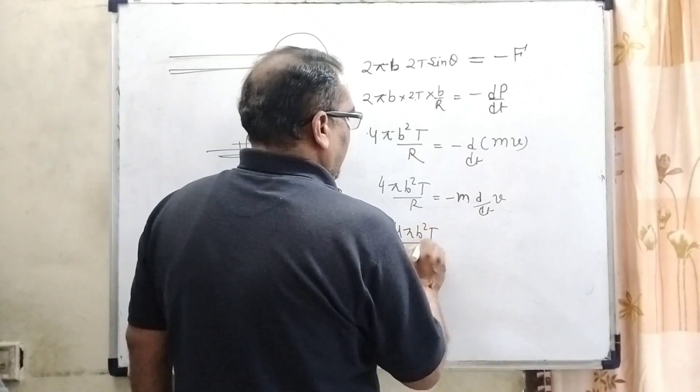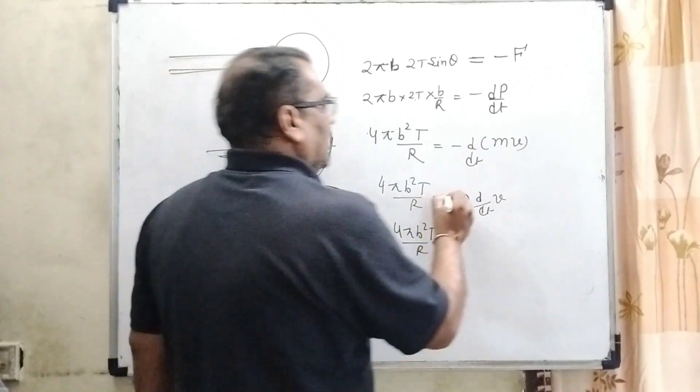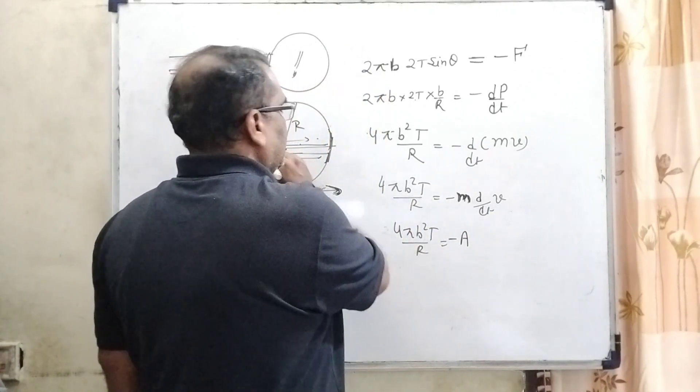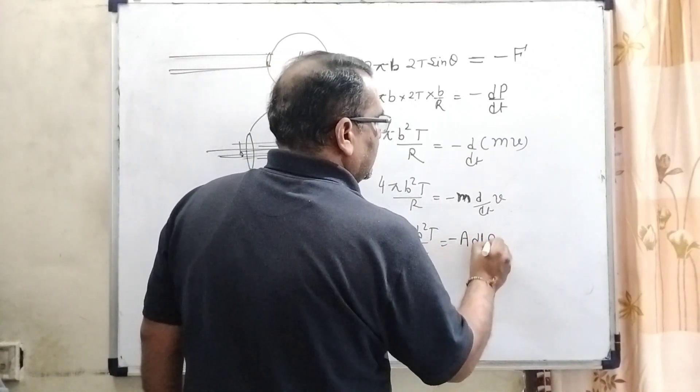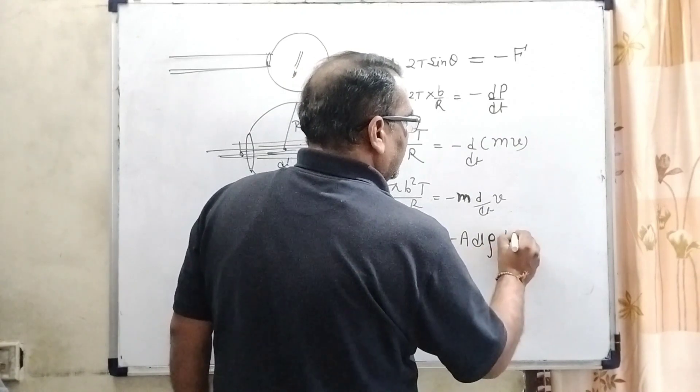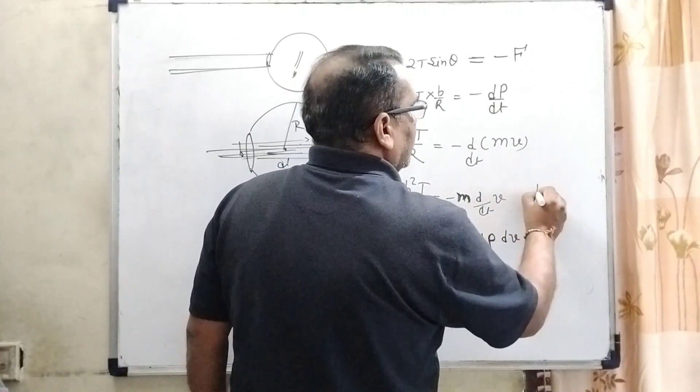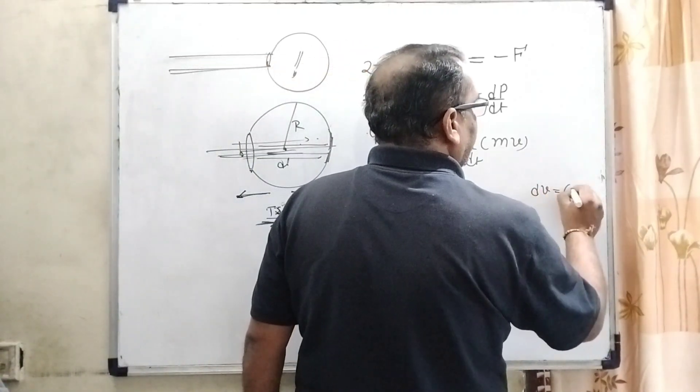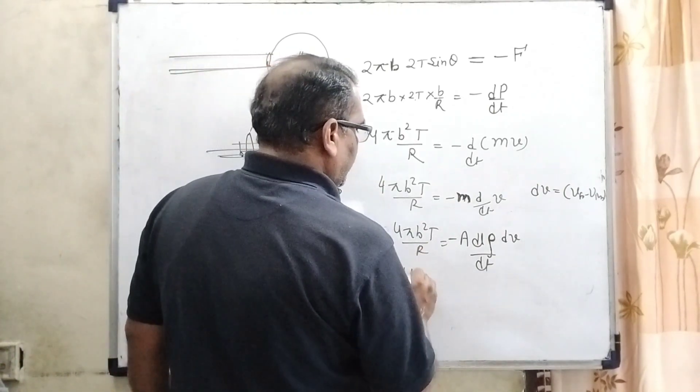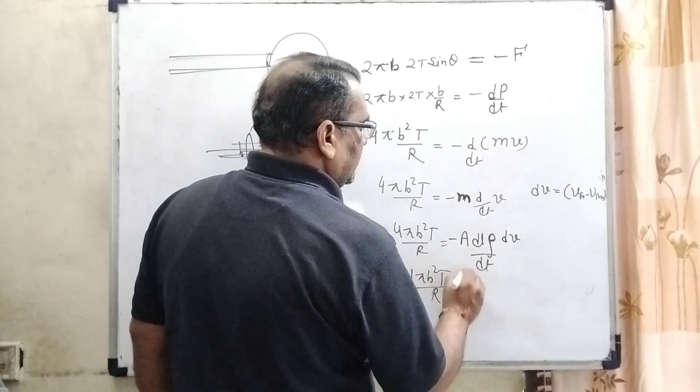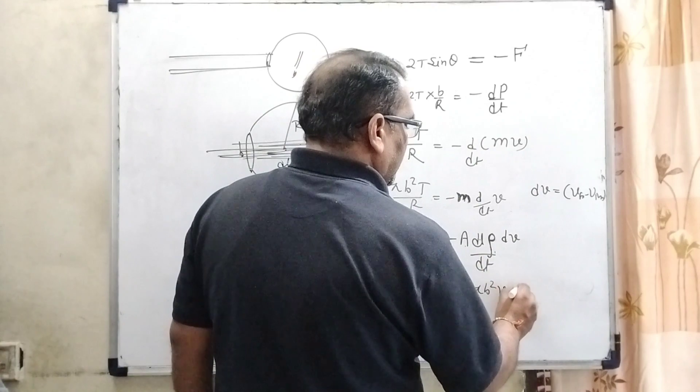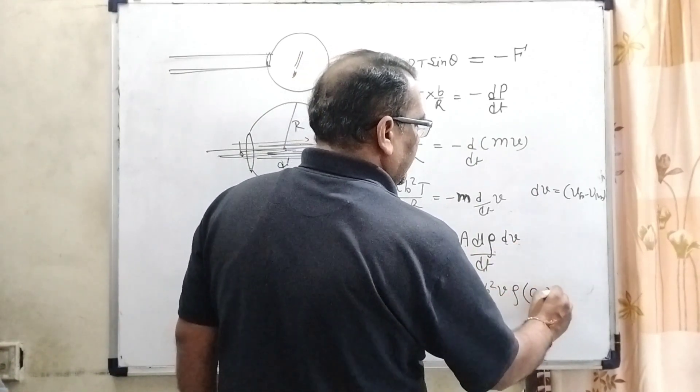So 4πB²T/R, here mass is the mass of this volume, that is area of cross section A times length dL times density ρ. And dv/dt, where dv means change in velocity. Change in velocity is final velocity minus initial velocity. Obviously final velocity of this air is zero. So 4πB²T/R equals area of cross section πB² times dL/dt which is v, times ρ, times dv which is 0 minus v.